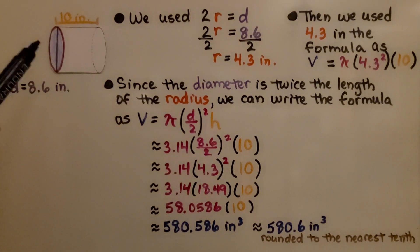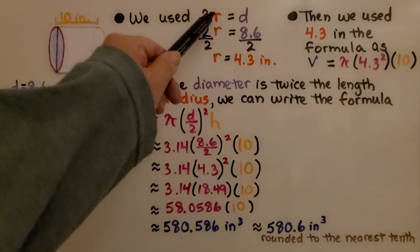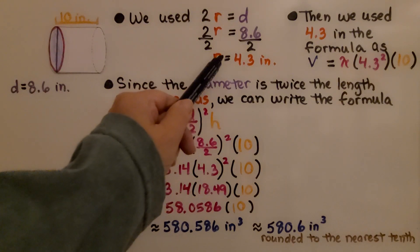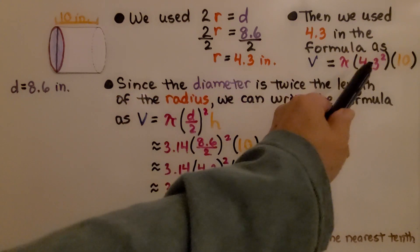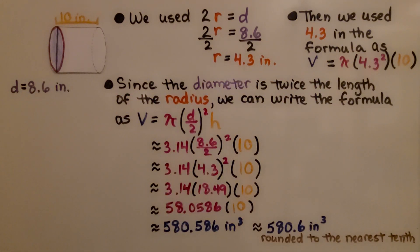So when we solved this problem just now, we used 2r is equal to d to find the radius. Then we used the 4.3 in the formula as 4.3 squared for r squared.